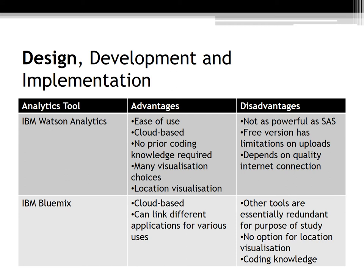IBM Bluemix, on the contrary, is cloud-based and can link different applications for various uses. However, other tools within Bluemix are essentially redundant for the purpose of this study — there are many tools such as Twitter, LinkedIn, and Node-RED that are not needed. There is no option for location visualisation, and some coding knowledge is required, so it is not suited to the average everyday user.